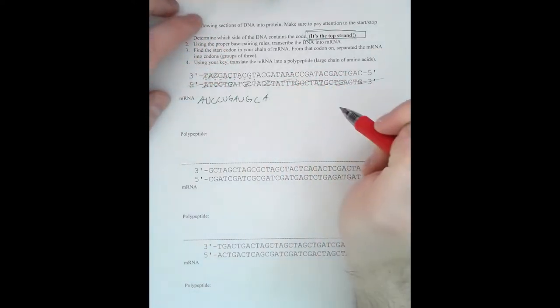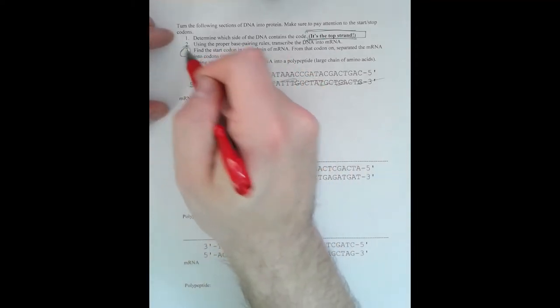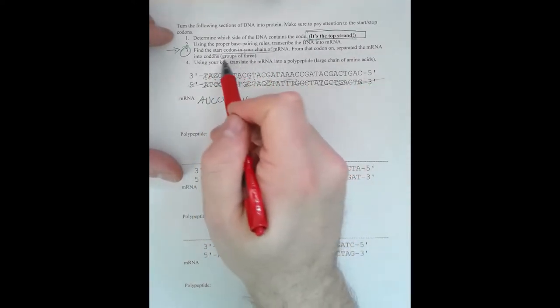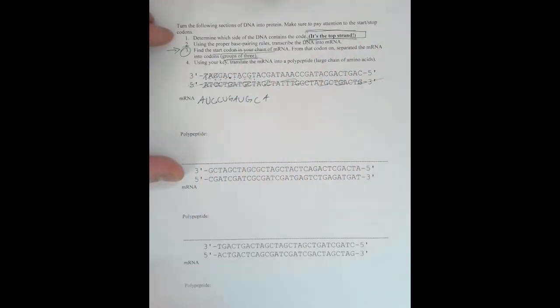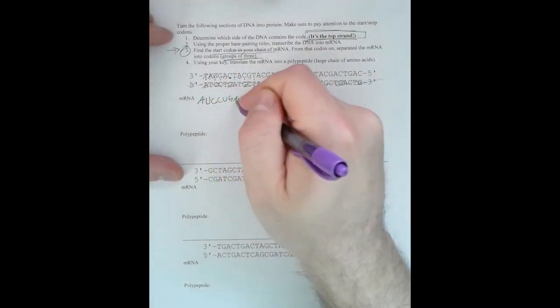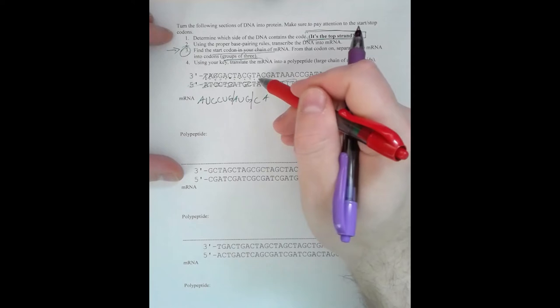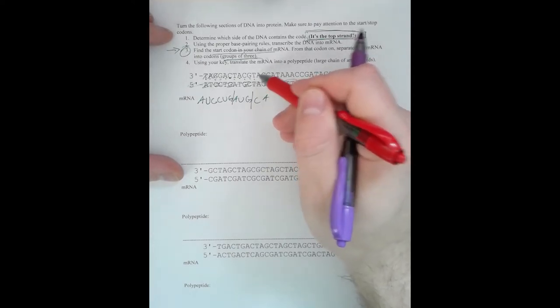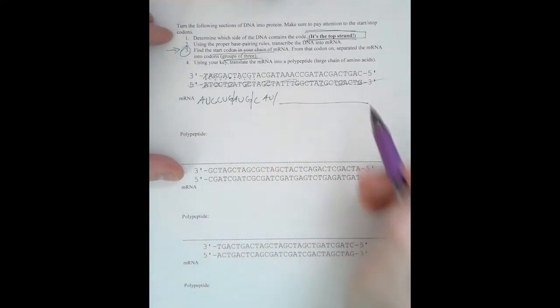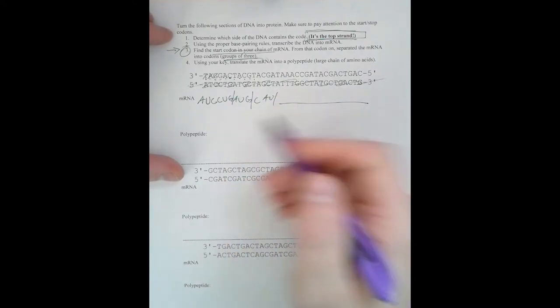And so on and so forth. Next, number three, very important that you do not skip step three, otherwise bad things will happen. You have to find the start codon. Remember, that's what sets the reading frame. So we ignore, ignore, ignore, ignore, ignore, and then we have AUG. That sets our reading frame. So CAU, right, and there'll be more. So this is the part that will actually get read by the ribosome when we do translation.